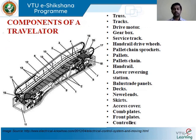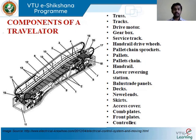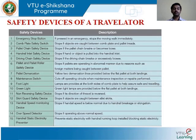The components of a travelator are very similar to an escalator. The main change is that the steps have been transformed into a flat plate or flat plane which moves from one point to another. The components include a truss, tracks, motor, service trucks, handrails, pallet chain, balustrades, balustrade panel, handrail, skirt plate, comb plates, and a controller — all very similar to what was studied for the escalator.